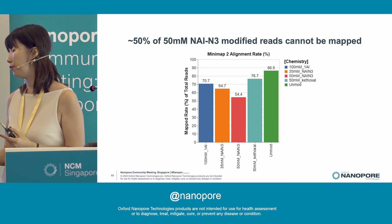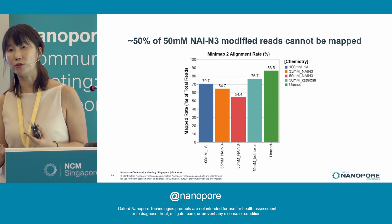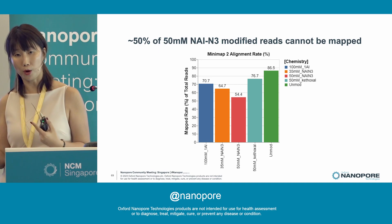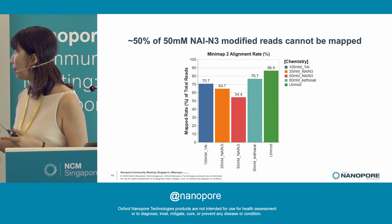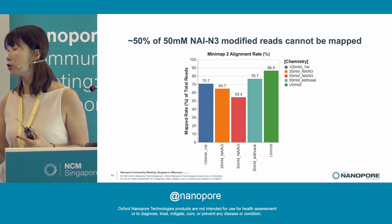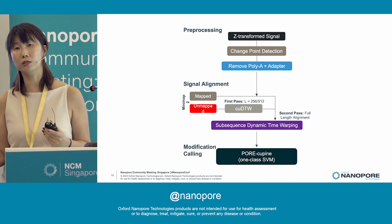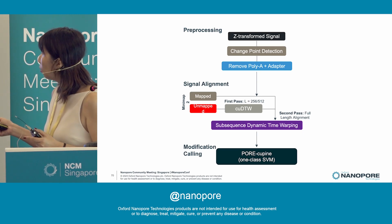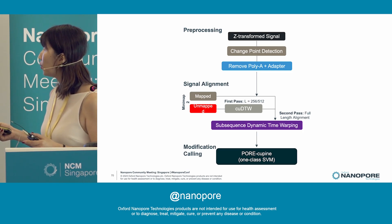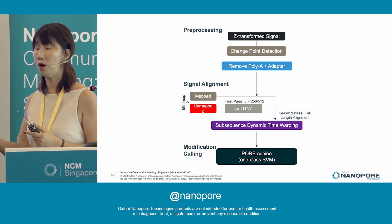One challenge with sequencing these heavily modified RNAs directly is that they get stuck in the pores, or the signals are so distorted because of the modifications that we are unable to map them properly. We found we were only able to map about 50% of these reads properly. So we wanted a strategy to rescue the failed reads by signal-level alignment. Instead of purely relying on base calling and mapping, we now perform DTW — dynamic time warping — signal alignment to rescue these failed reads and look at RNA structures.